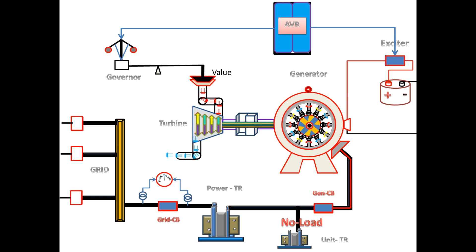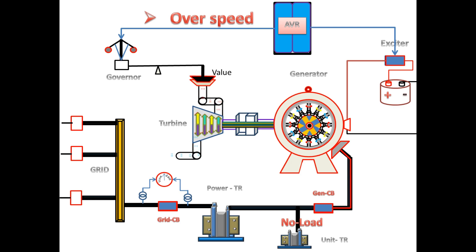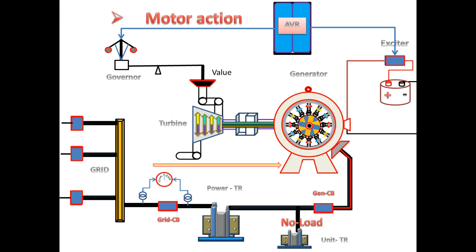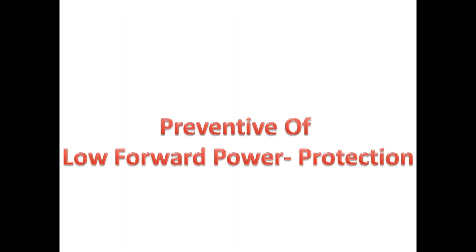In a few cases it produces over speed to the turbine, since the rotating and speed control are mechanical — they are not able to reduce the speed suddenly, and the rotating parts are designed for some maximum inertia only. If it rises more than that, it may affect the mechanical parts. In some other cases it leads to motor action: when the turbine does not have sufficient steam to produce power, or the turbine trips, then the power from the grid will start to flow towards the generator and it will lead to motor action.